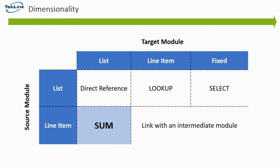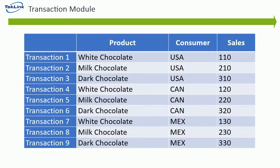For our first example, we're going to talk about the sum function. In this case, our source module is going to have a line item formatted as a list, while the same list is going to be used as a dimension in our target module. This is a table of sales of different kinds of chocolates sent to different countries. Our transaction numbers and line items are only two dimensions in this table. Products is a line item formatted by our list of products, and consumer is a line item formatted to our list of buyers.